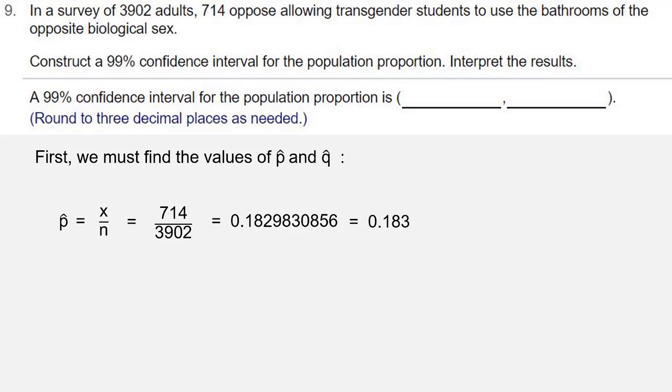Now we can find the value of q-hat by doing 1 minus p-hat. So that's 1 minus 0.183, which is 0.817. That's our value of q-hat.